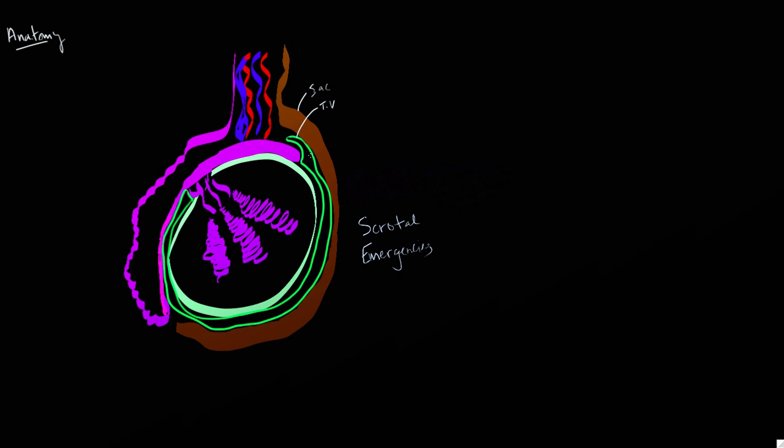In between, there's a potential space in which fluid collections or hydroceles can develop, or hematoceles if there's blood collections in that location. This is an important structure because if it completely encircles the testicle and epididymis, as can be seen in what is called the bell clapper deformity, it can make these patients more prone to testicular torsion.